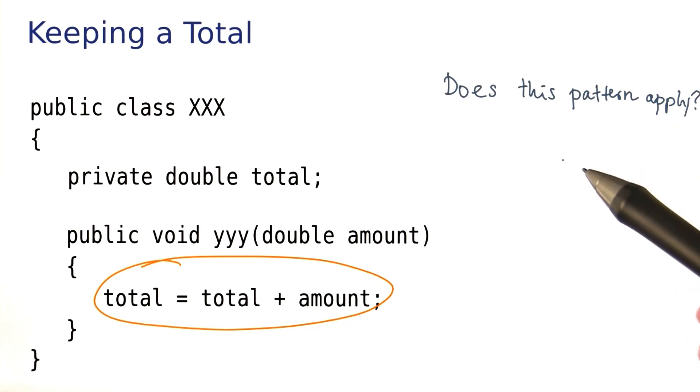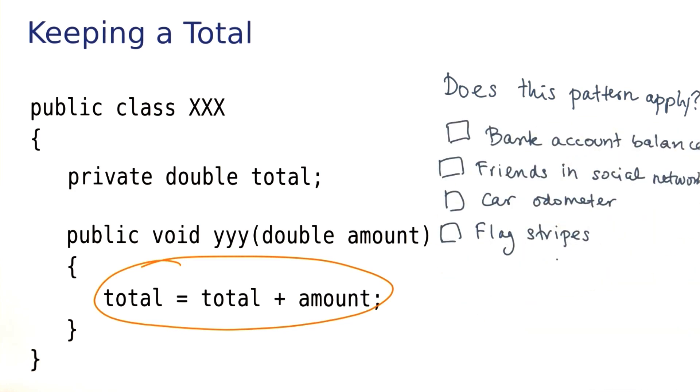I'll give you a few situations, and I'll ask you whether the pattern of keeping a total applies. Would you keep a total to model the account balance in a bank account? Friends in a social network? A car odometer? Stripes in a flag? Check all where you think the pattern doesn't make sense.